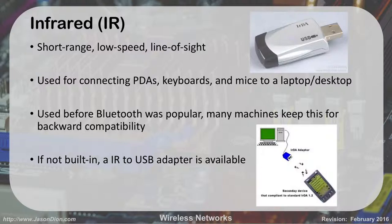Infrared is a short-range, low-speed, line-of-sight connection. We don't use infrared a whole lot anymore. It was used a lot with old Palm Pilots — the device had to physically be in sight looking at the infrared receiver to send data. They were very slow and good for keyboards and mice due to low bandwidth. Now that Bluetooth is popular, most things have switched over. Some laptops still have infrared for remotes, and there are infrared-to-USB adapters available, but most of the time you're not going to run into infrared anymore.